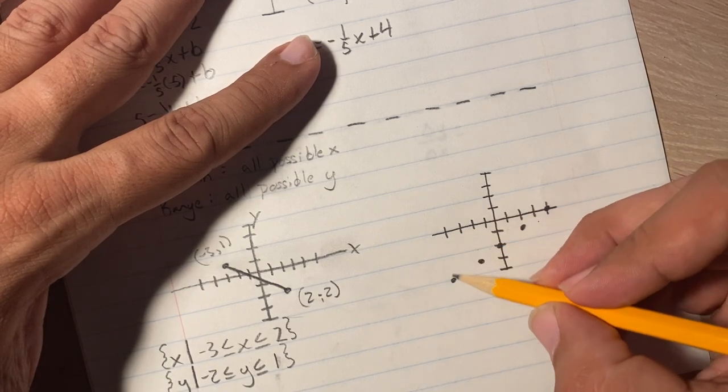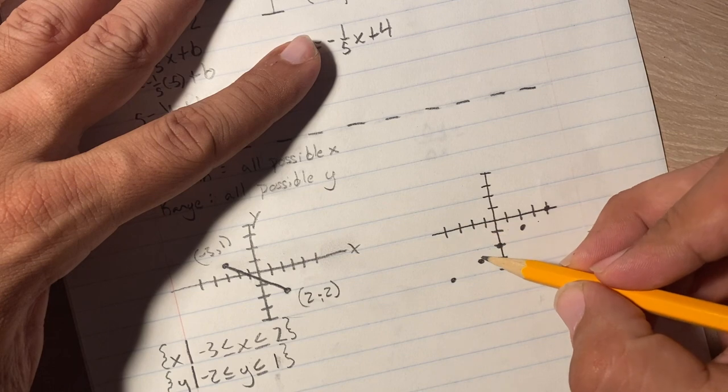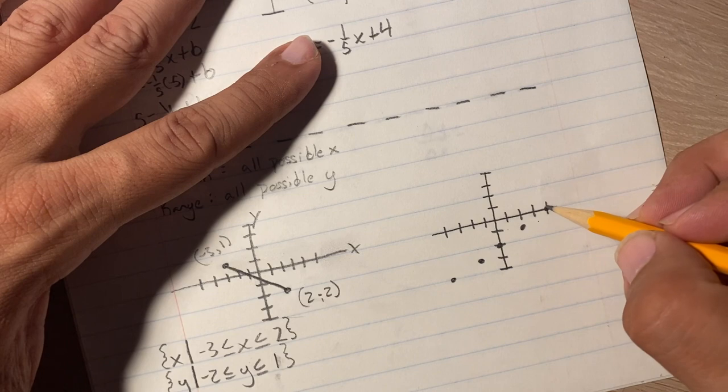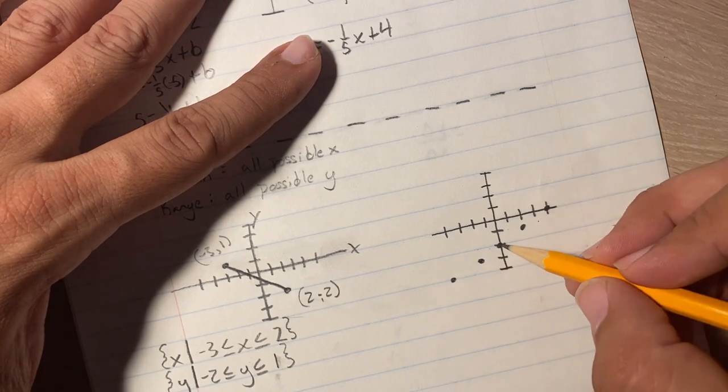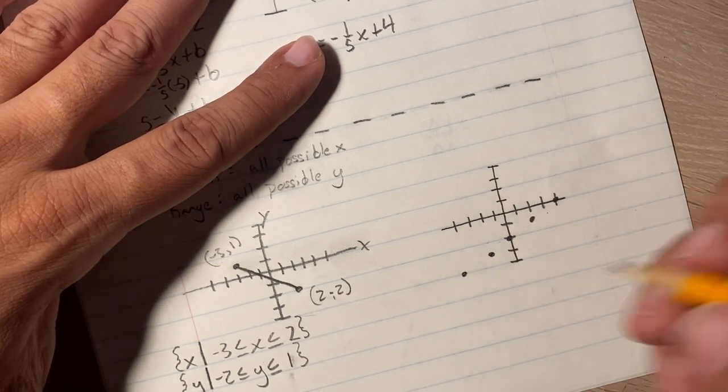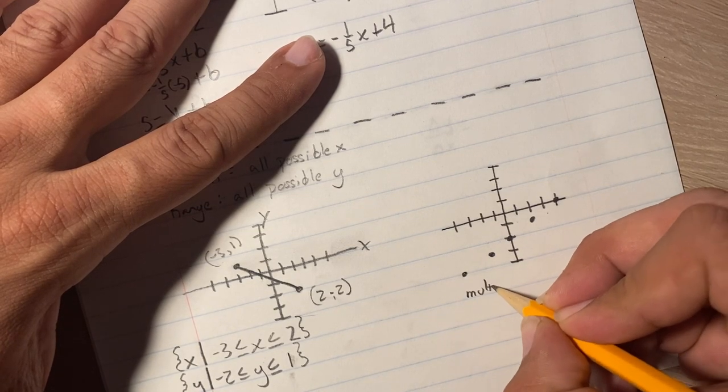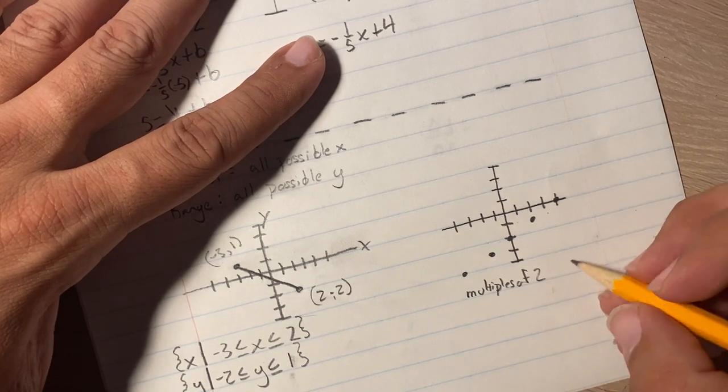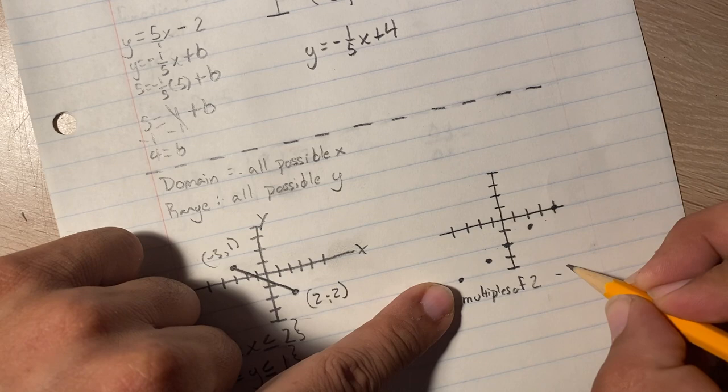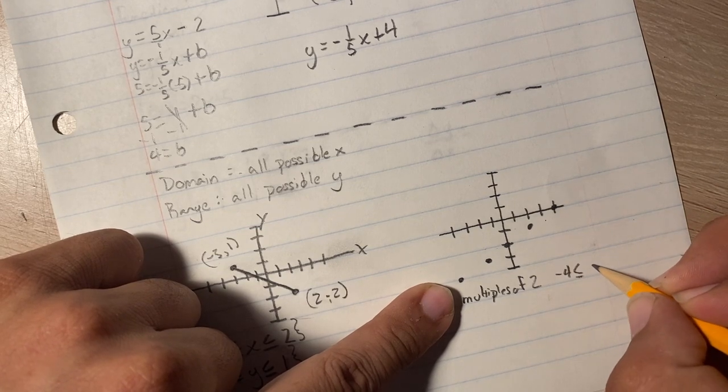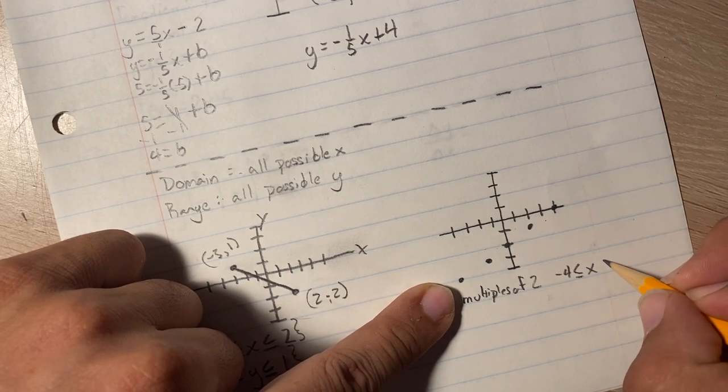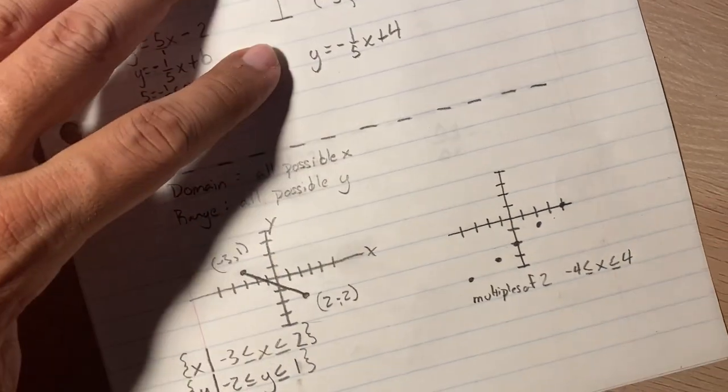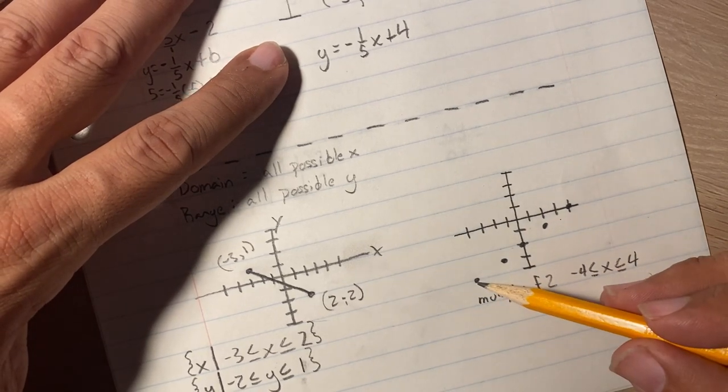So it's not every single number. So the x, there's one here on negative 4. There's one here on 2. There's one here on 0, then 2, then 4. So 4, 2, 0, 2, 4. So it's multiples of 2. And it starts at negative 4. And it goes all the way to 4. And that's it.